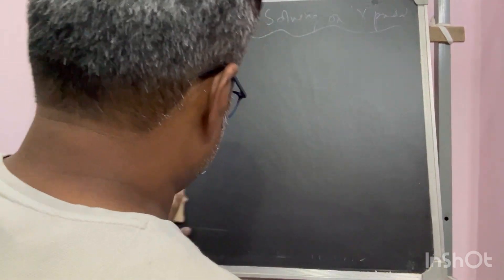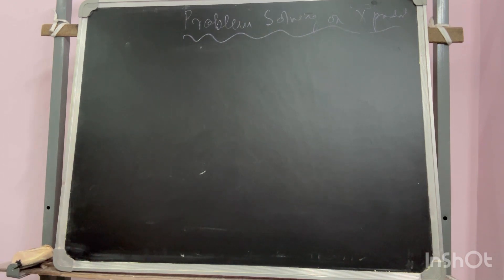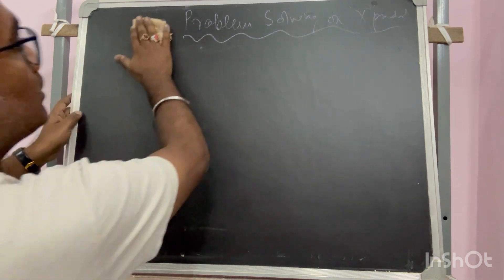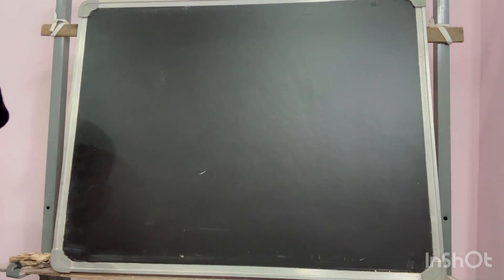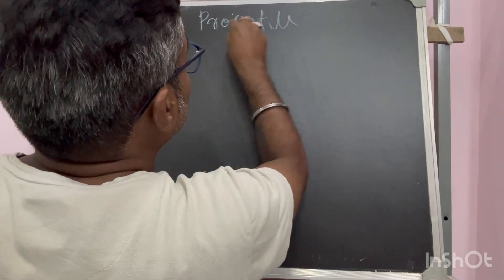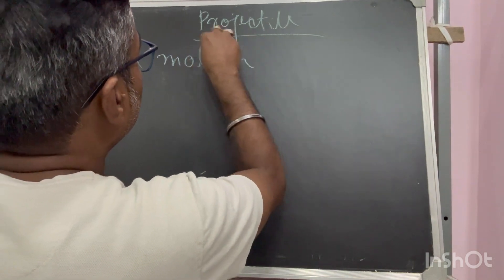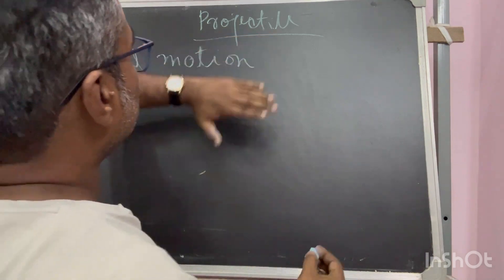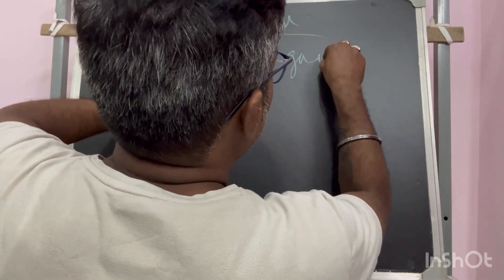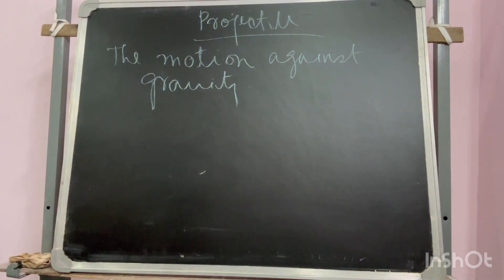I will move to the next subject. The subject is projectile. This is a very short subject. The projectile is the motion — as I have already told you in other classes — the projectile is the motion against gravity. This is the simplest definition one can say about projectile.